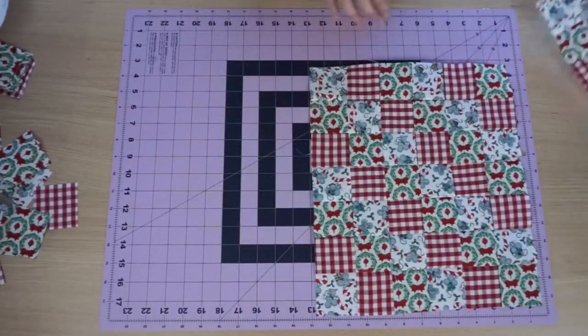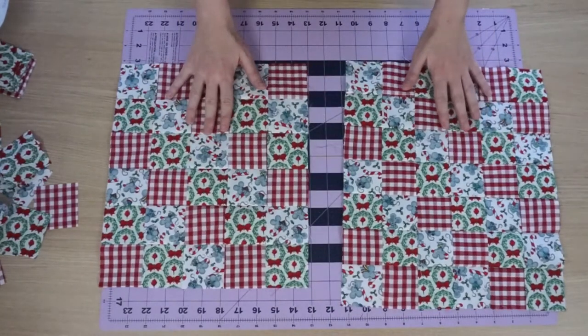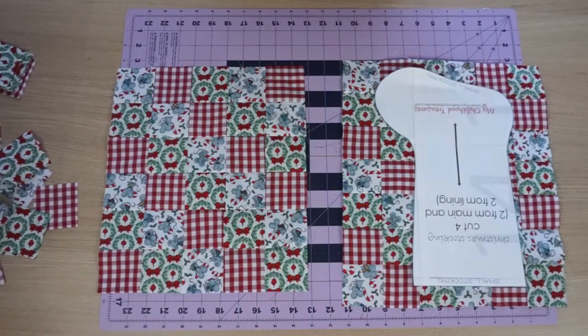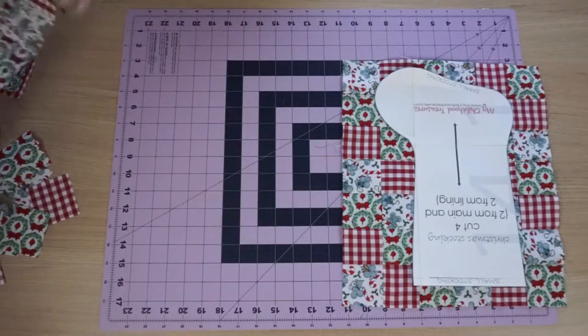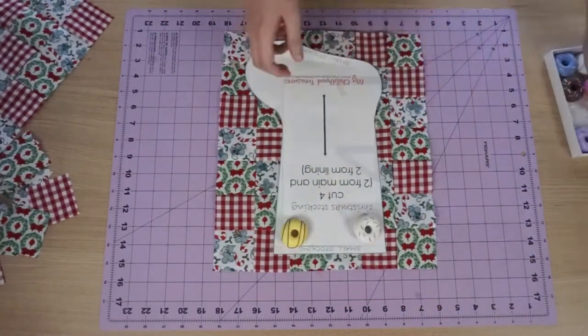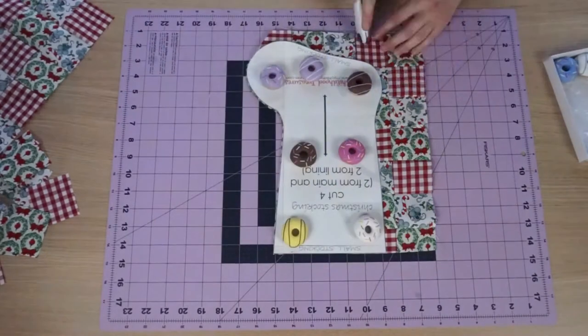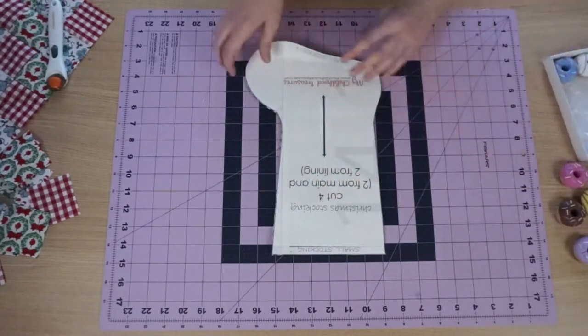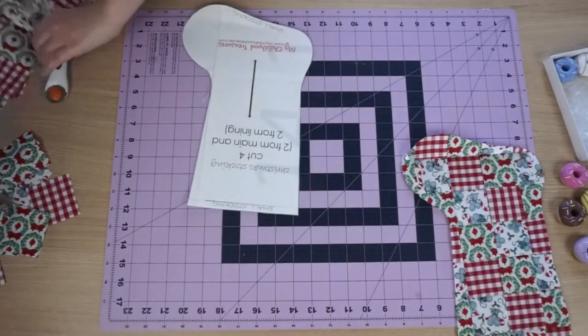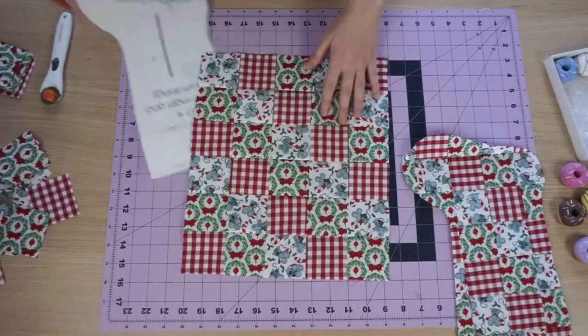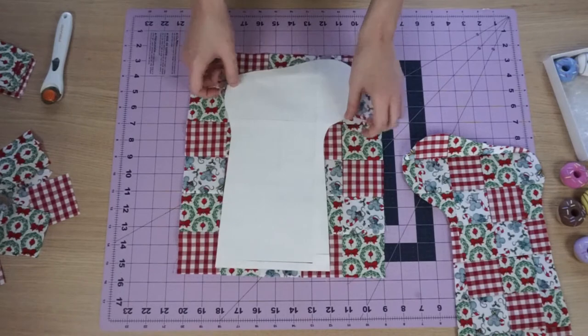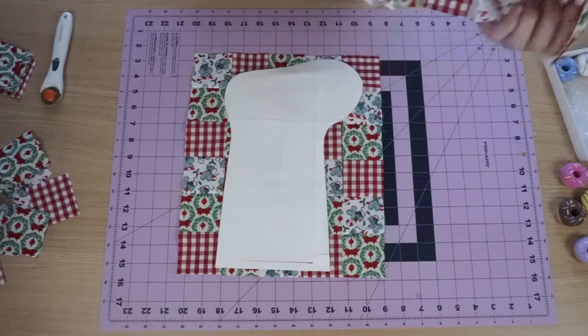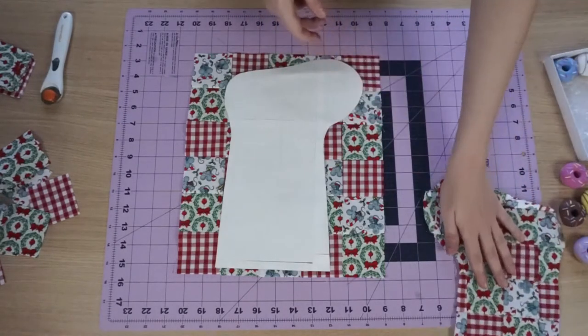So I've made two squares already, and what I'm going to do is go ahead and cut out my stocking. Okay, so once you've cut your first stocking piece, you want to take your other square that you've sewn together, and then flip over your pattern piece. And you're doing this so that these become a mirror image of each other, so you can sew right sides facing once we get to that part.